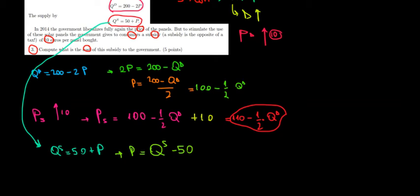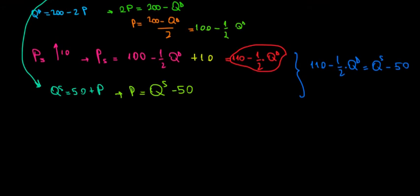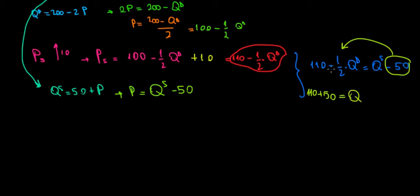We have the demand price and the supply price — let's set them equal. The demand price, 110 minus one-half times quantity, must equal the supply price, which is quantity minus 50. Taking quantities to one side and numbers to the other: 110 plus 50 equals quantity plus one-half quantity. That gives us 160 equals 1.5 times the quantity.